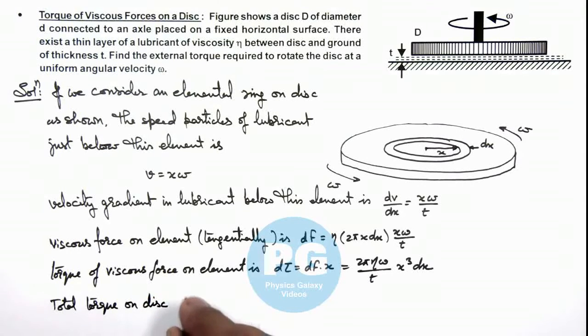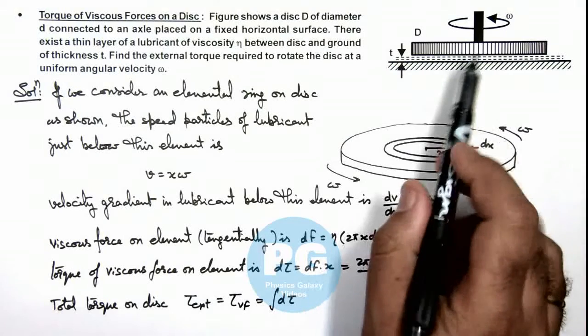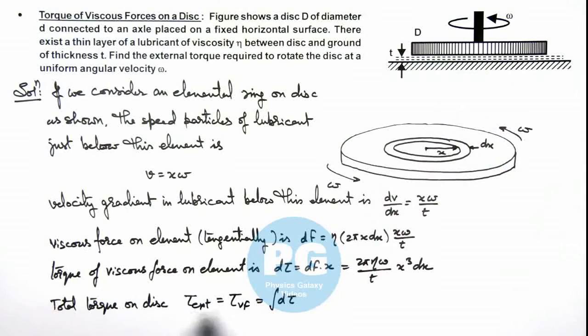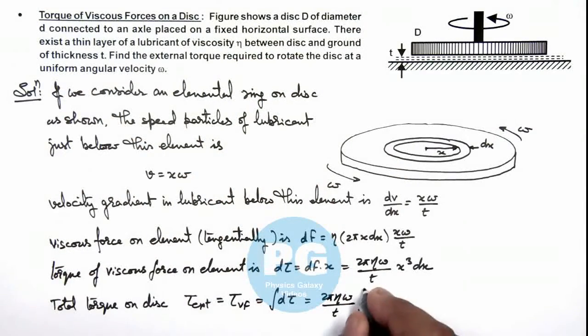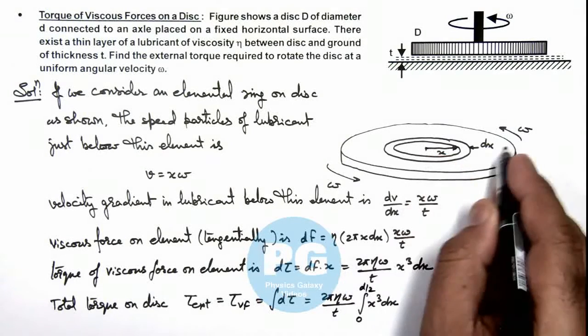Here if we talk about external torque, this must be equal to torque due to viscous forces, that is integration of dτ. To maintain the constant angular speed omega, the external torque must be equal to the torque of viscous forces. So this will be integration of 2π eta omega by t integration of x³ dx, and we integrate it from zero to d/2, because x will be integrated to the radius of this disc.